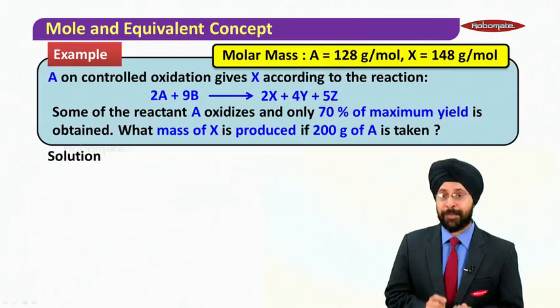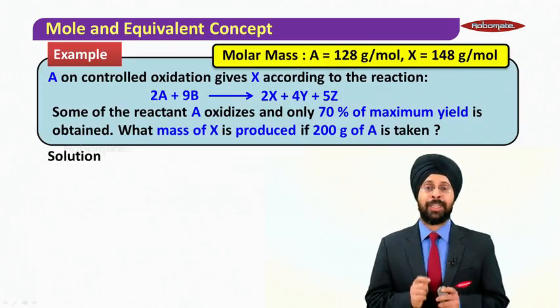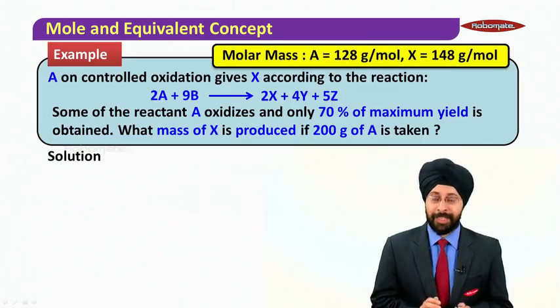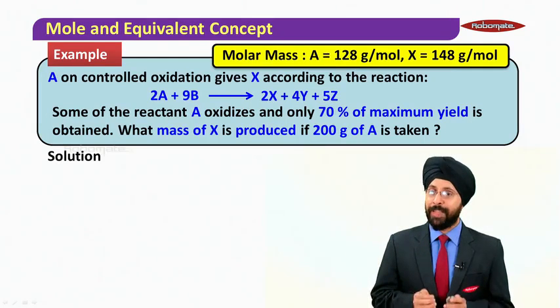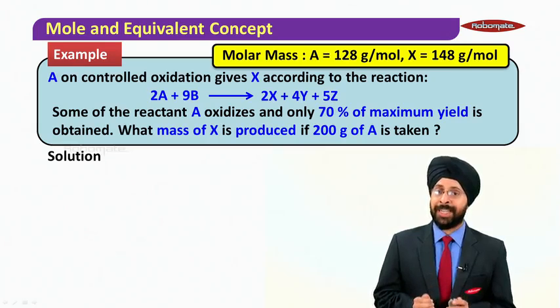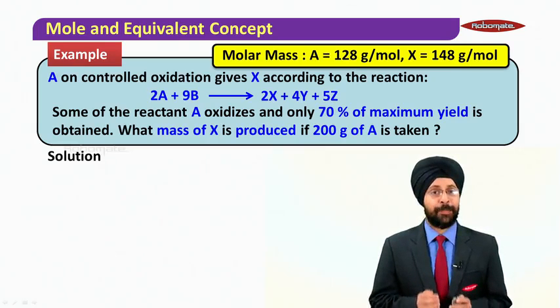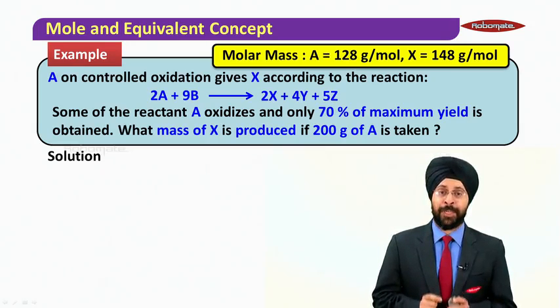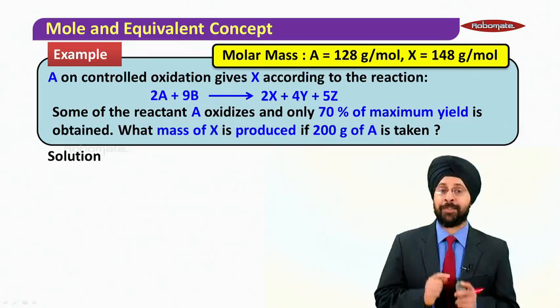Now let us take an example for this. A on controlled oxidation gives X according to the reaction: 2A + 9B → 2X + 4Y + 5Z. Some of the reactant A oxidizes and only 70% of maximum yield is obtained. What mass of X is produced if 200 grams of A is taken?